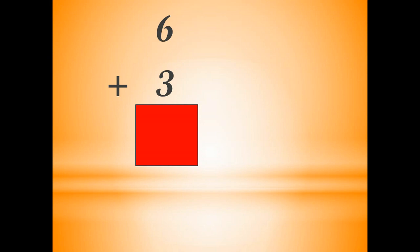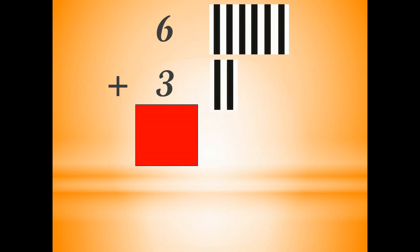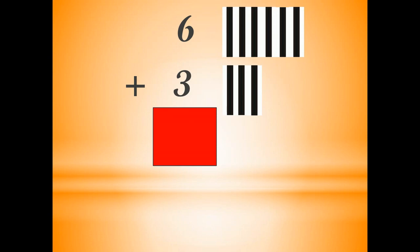6 plus 3 — what will be the answer? Tell me. First number is 6, so we will draw six lines: 1, 2, 3, 4, 5, 6. Then the next number is 3, so now we will draw three more lines: 1, 2, 3. Now we count all the lines: 1, 2, 3, 4, 5, 6, 7, 8, 9. So your answer is 9. 6 plus 3 is equal to 9.